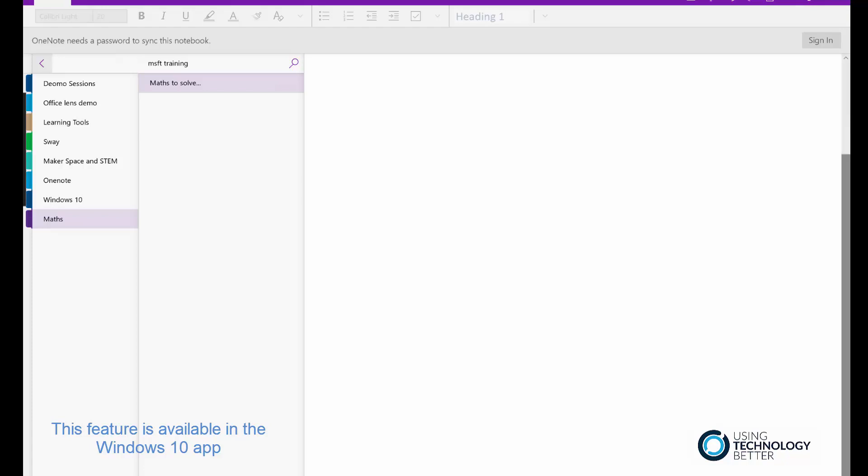Now, the first way is, and probably the easiest way, is you can just type a maths question or equation into OneNote. So if I say 43 plus 74 equals, it'll just give me the number.